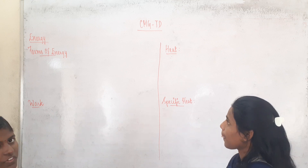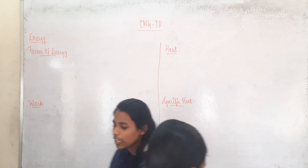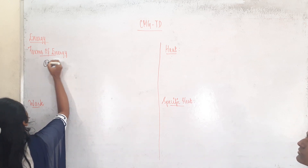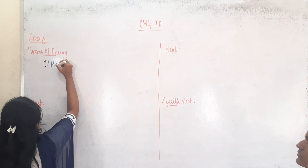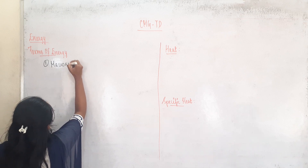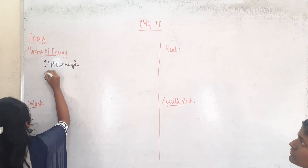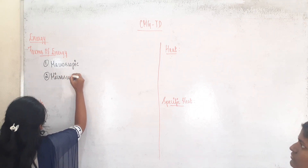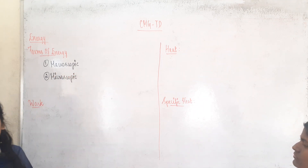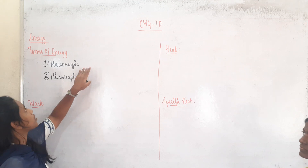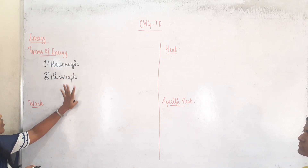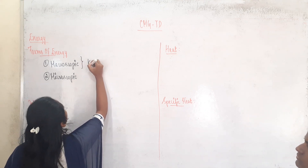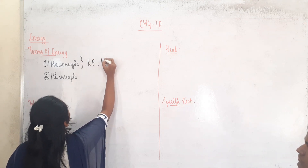Firstly we will be seeing about forms of energy. There are two forms of energy: the first one is macroscopic and the second one is microscopic. The larger amount of energy forms are called macroscopic and the lesser amount of energies are called microscopic. Examples for macroscopic are kinetic energy and potential energy.